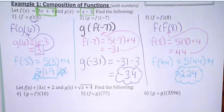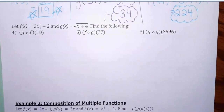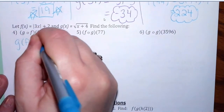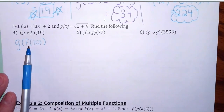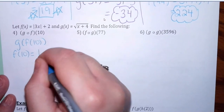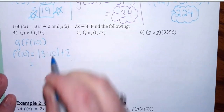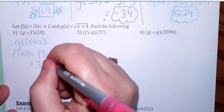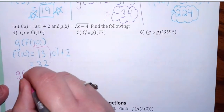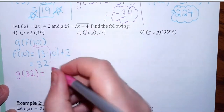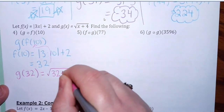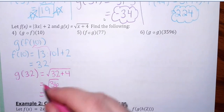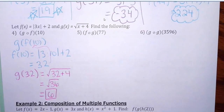Now I'm going to switch up the functions, so make sure you pay attention to the directions — otherwise this works the same. g composed with f of 10, or g of f of 10. Whatever's closer goes first, so I'm going to plug 10 into the f of x function. f of 10 with an absolute value: 3 times 10 in the absolute value plus 2. That's positive 30, so 30 plus 2 equals 32. Then the g function is the square root of x, so square root of 32 plus 4 gives square root of 36. The square root already exists in this problem, so do not introduce a plus or minus symbol — just plain 6 is your answer.